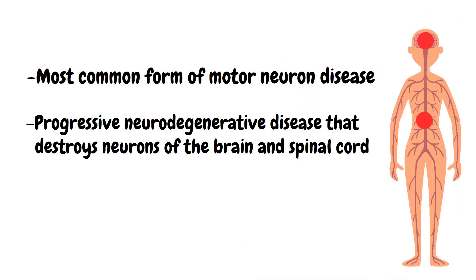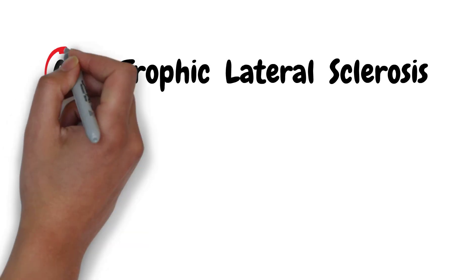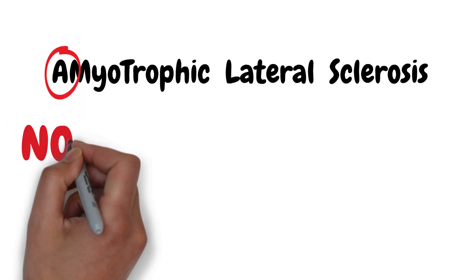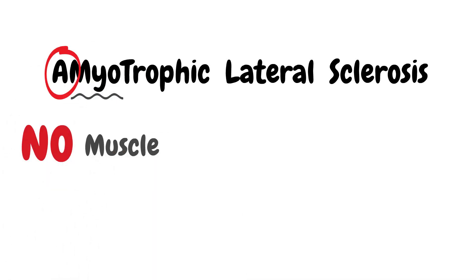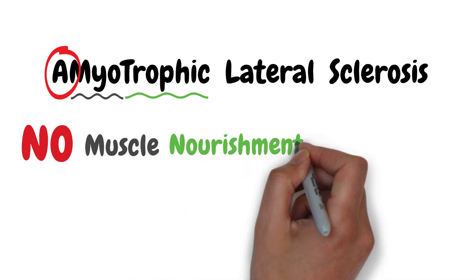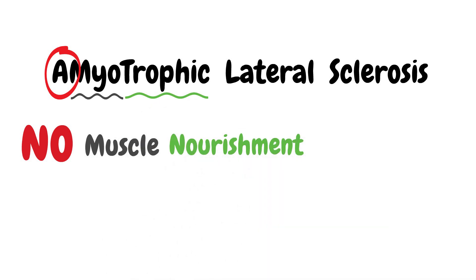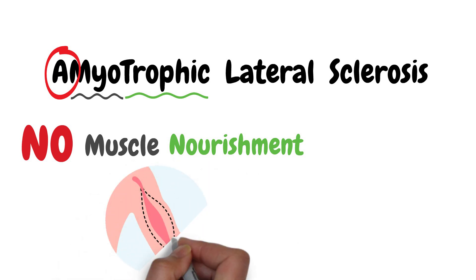Amyotrophic comes from the Greek language. 'A' means no, 'myo' is muscle, 'trophic' means nourishment. So amyotrophic means no muscle nourishment. And when a muscle has no nourishment, it atrophies or wastes away.